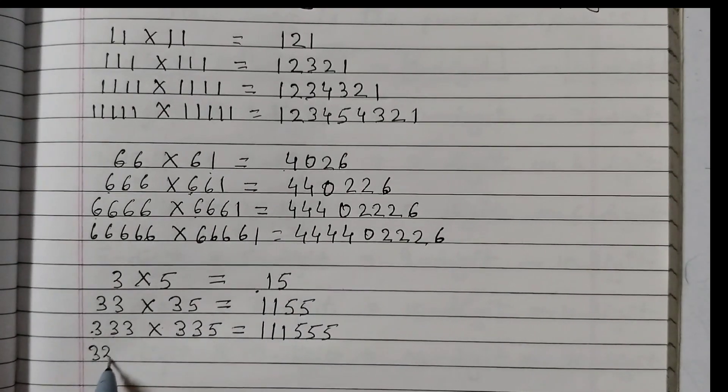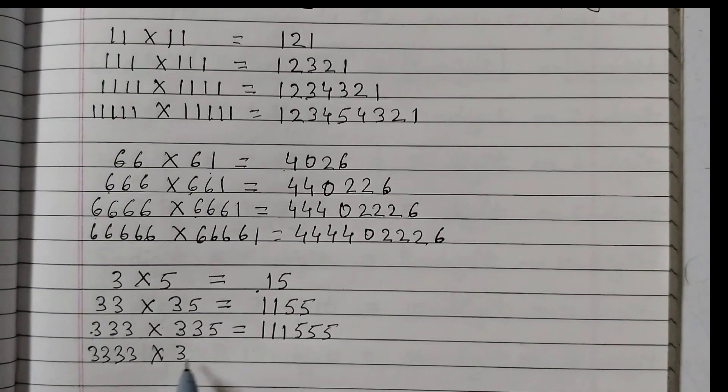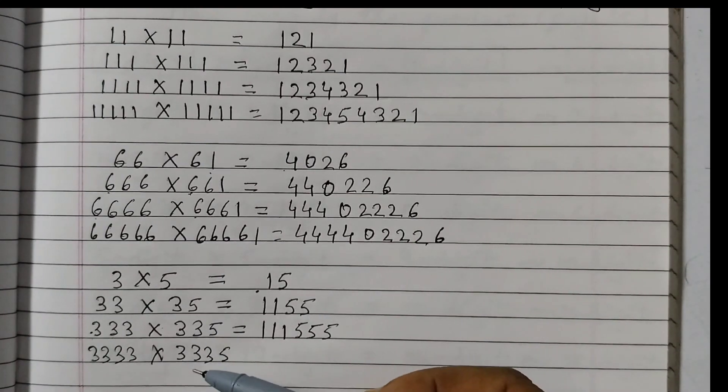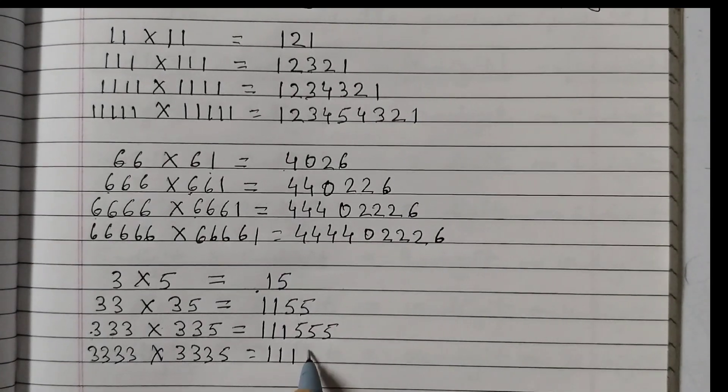So one more 3. One, two, three, four. And here it's 3335. One extra 3 we are putting. Right? Each step. So here it will be 1111, 5555.